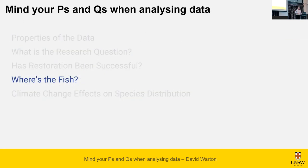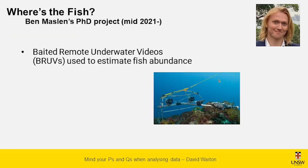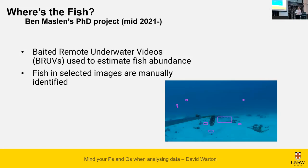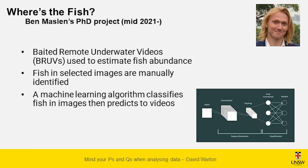Now let's talk about the fish. Ben is two years into his PhD — he loves fish and wanted to use baited remote underwater videos to estimate fish abundance using machine learning. As an undergrad volunteer he sat in a lab watching lots of videos and manually writing down what he saw. That's tedious, takes a long time, and lots of people do this. It would be nice to have an automated way to identify and classify fish. People are currently doing this by placing bounding boxes around fish in images and feeding these into a machine learning algorithm to automatically classify them.